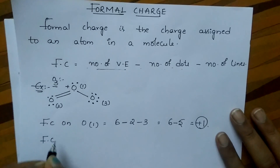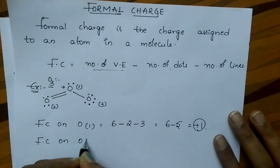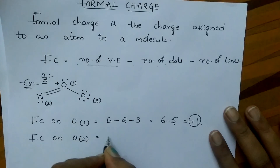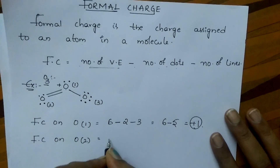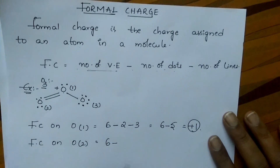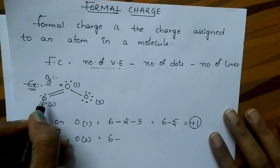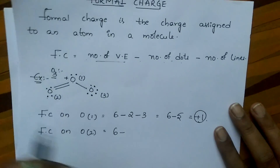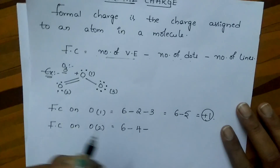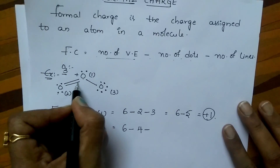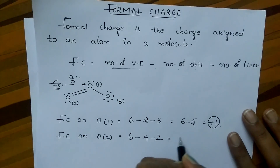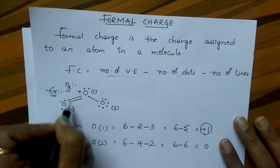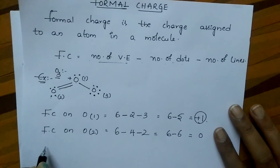Now count the formal charge on second oxygen. The oxygen group number is 6, so number of valency electrons are 6, minus number of dots: 1, 2, 3, 4, minus number of lines: 1, 2. So 6 minus 6 which is equal to 0. There is no formal charge on this oxygen.